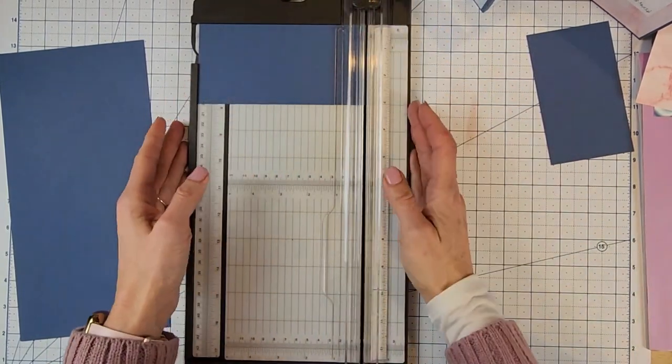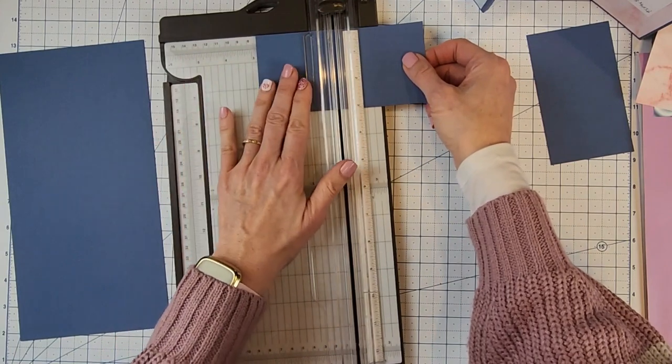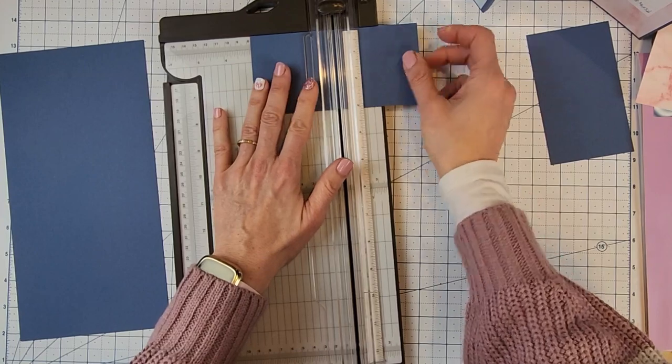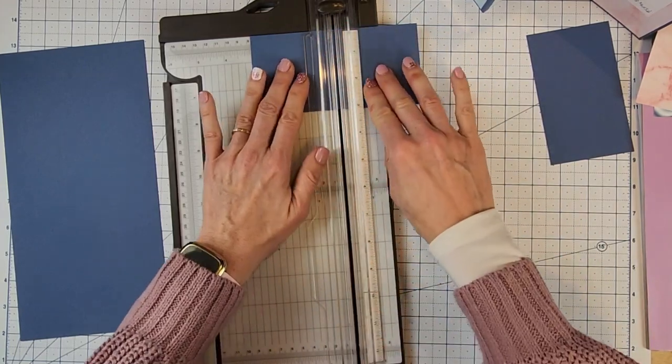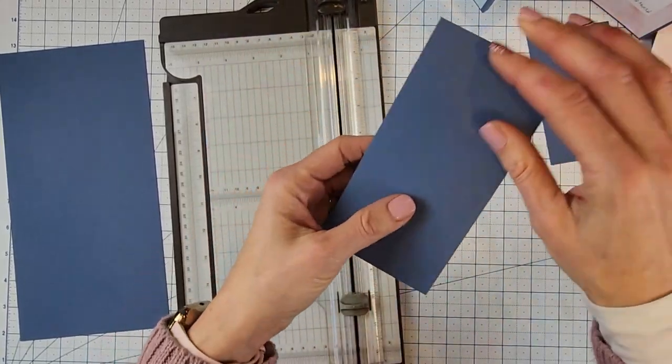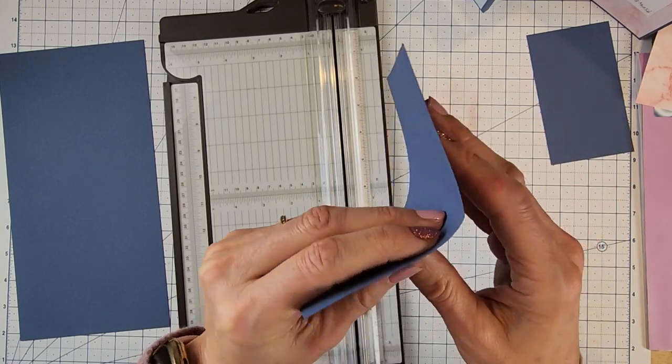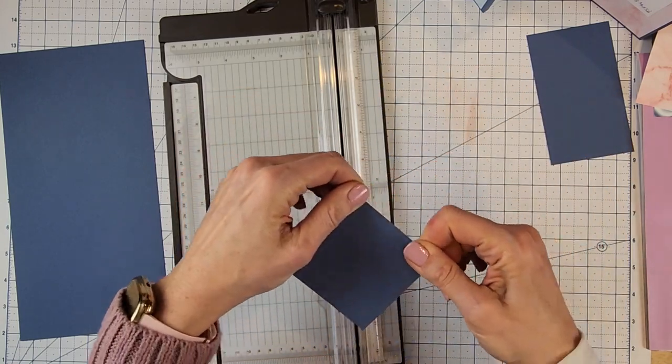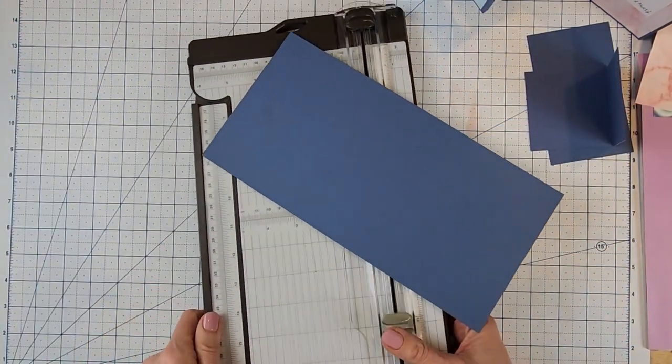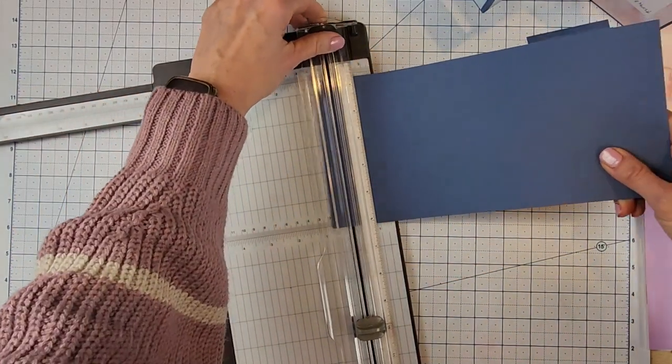And now let's score. So we want to score the 3 by 6 inch piece on the long side at 3 inches. Make sure the cutting blade is out of the way if you're using your stamping trimmer.